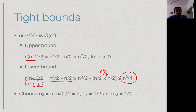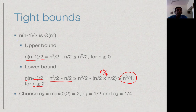So for all values bigger than 2, n times (n minus 1) divided by 2 is less than half of n squared and greater than one-fourth of n squared. We have found matching upper and lower bounds, which shows that n times (n minus 1) divided by 2 is Theta of n squared.